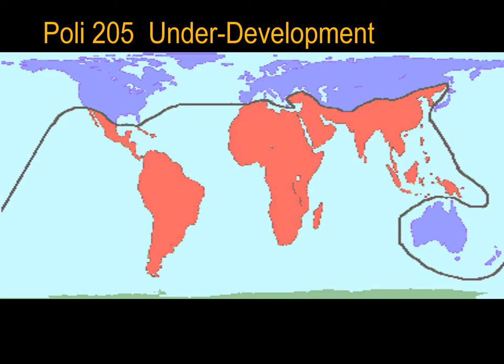Underdevelopment. What explains the very uneven socioeconomic development of states in the world? There is a popular argument that persisting poverty in the developing world is the result of structurally unfair trade practices between the developed world and less industrialized states. An alternative explanation is that developing world states have lower levels of per capita income due mostly to a failure to develop domestically.